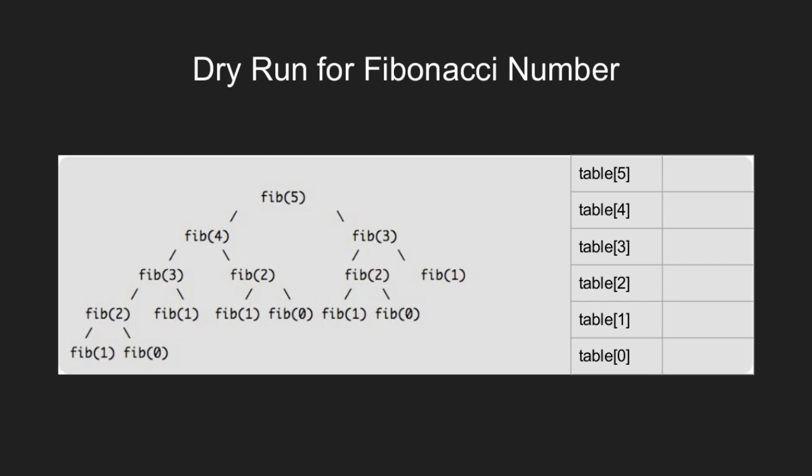First we enter the base values in the lookup table. Now, we run a loop for the remaining values of i in order to fill the rest of the table. We update table[2] as 1, table[3] as 2, table[4] as 3, and finally table[5] as 5. And done.